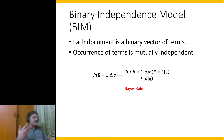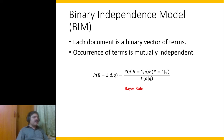With the Binary Independence Model assumptions, we compute the probability of relevance, which is P(r=1 | d, q). Using Bayes rule, we can flip this: P(r=1 | d, q) = P(d | r=1, q) × P(r=1 | q) / P(d). We have the likelihood and the prior, giving us the posterior probability of relevance.